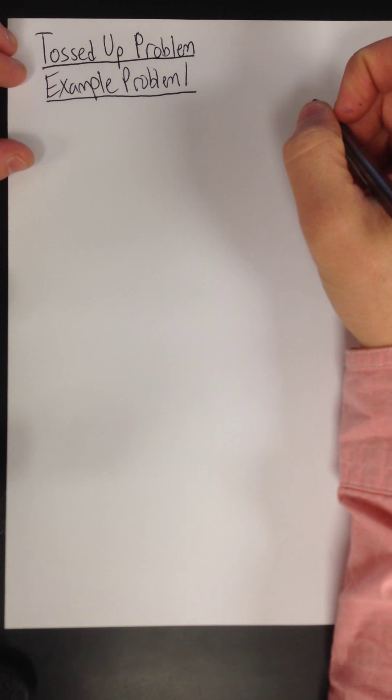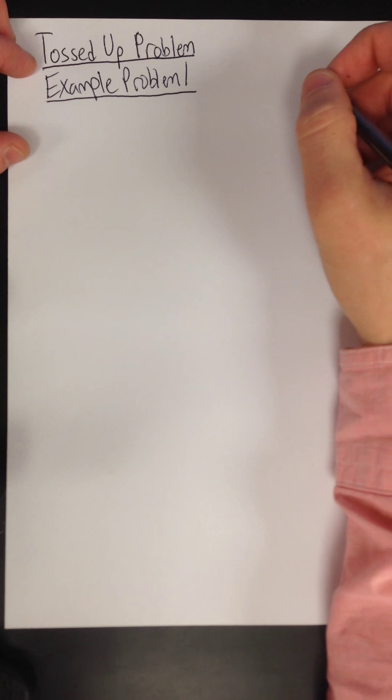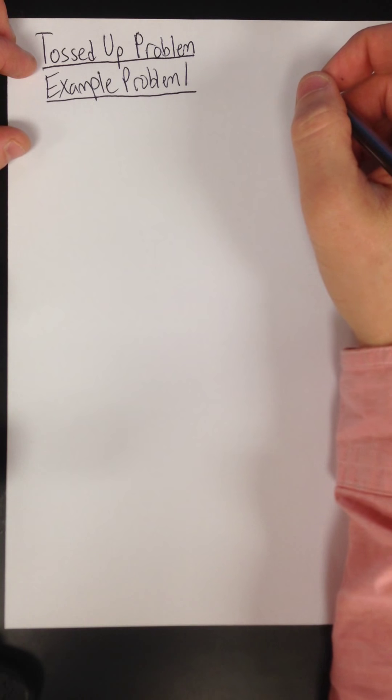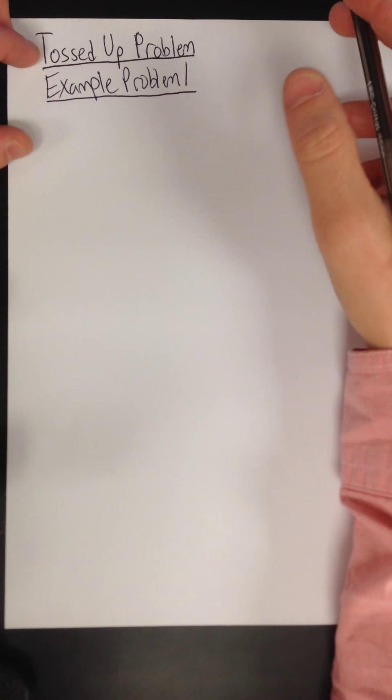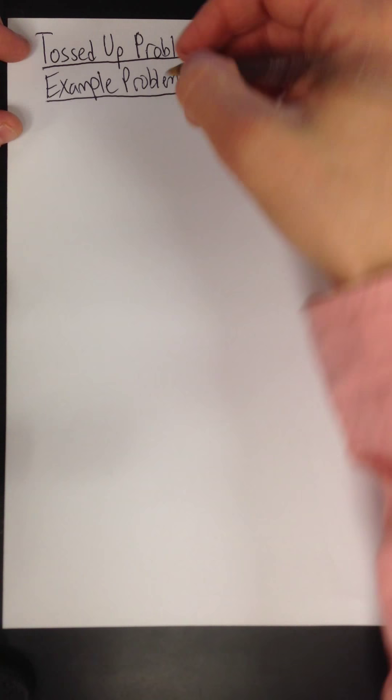This is example problem one, a toss-up problem. Solve this problem in your notebook to start the worksheet as I solve it right now. So the problem is a pole vaulter. You should read it before I continue here.